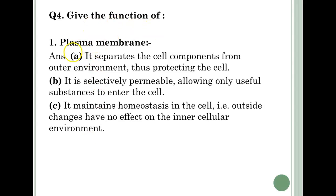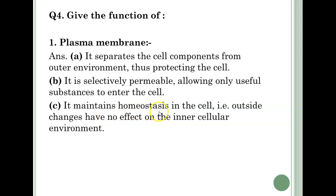Give the function of the Plasma membrane. A: It separates the cell components from the outer environment, thus protecting the cell. B: It is selectively permeable, allowing only useful substances to enter the cell. C: It maintains homeostasis in the cell, i.e., outside changes have no effect on the inner cellular environment.